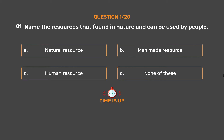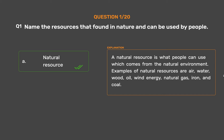The correct answer is Option A: Natural resource. A natural resource is what people can use which comes from the natural environment. Examples of natural resources are air, water, wood, oil, wind energy, natural gas, iron, and coal.